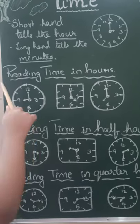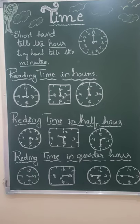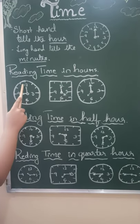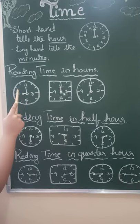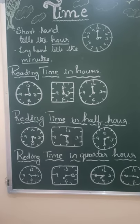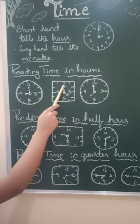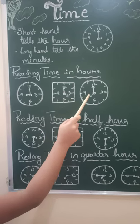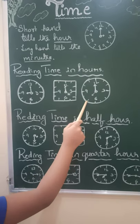Let's start with reading time in hours. For example, when the longhand is pointing to 12 and the shorthand is pointing to 9, that means it's 9 o'clock. Similarly, this is 4 o'clock. This is 7 o'clock.